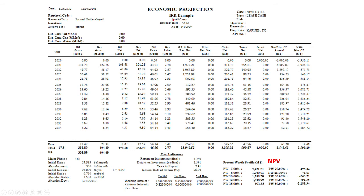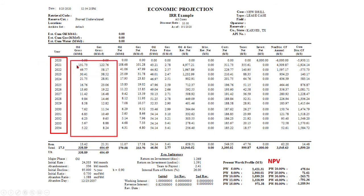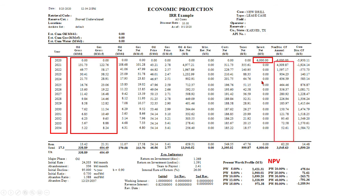Let's look at what the cash flow report looks like. PHDWIN calls it an economic projection report, but it's basically just an annual cash flow report for the project. You have the oil and gas each year that you're projecting to produce based on your reserve graph. You also put in your investment of $6 million here, and the program calculates a non-discounted cash flow — just how much money you bring in each year. On the far right is the cumulative discounted cash flow based on a 10% discount rate, which is a default rate we use to get started. For this project, the net present value — PV10 — is about $1.6 million.